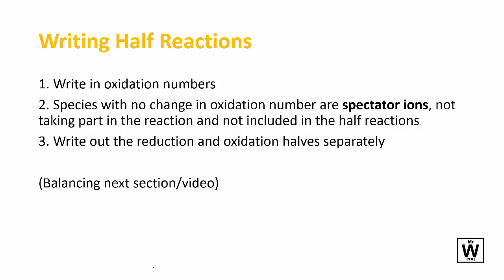So the steps are here: write the oxidation numbers, work out what part you're going to exclude which is the spectator ions, and then you can write the two oxidation and reduction halves separately. We won't be balancing the half reactions or doing the complete balanced reaction until the next video or the next section.